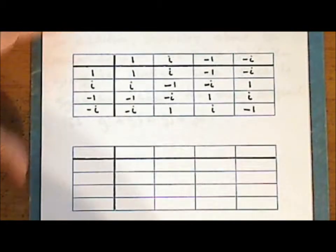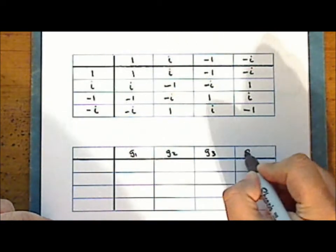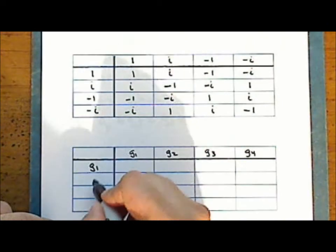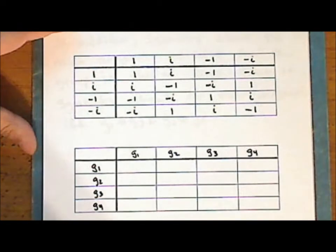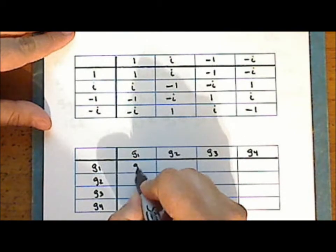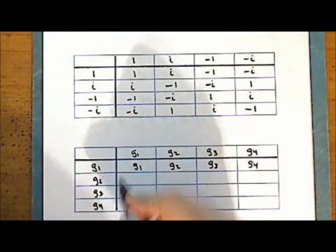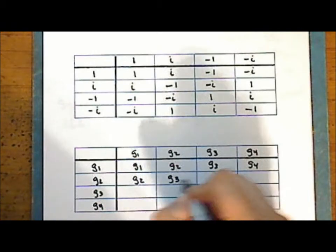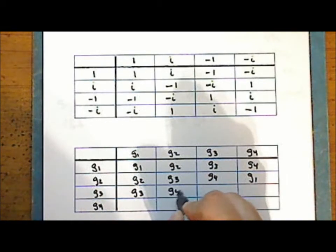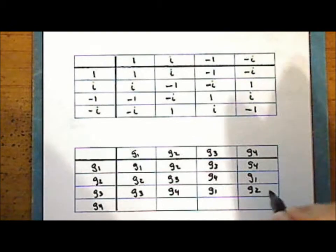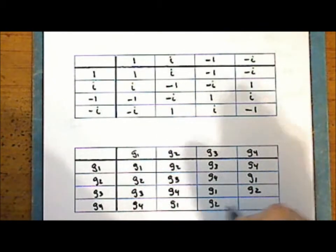Negative 1 times negative 1 is 1, negative 1 times negative i is i, and negative i times negative i is negative 1. So let's rename these elements g1 through g4 and reproduce this table. On the first row of the Cayley table we have g1, g2, g3, g4. On the second row we have g2, g3, g4, g1. On the third row we have g3, g4, g1, g2. And on the last row we have g4, g1, g2, g3.